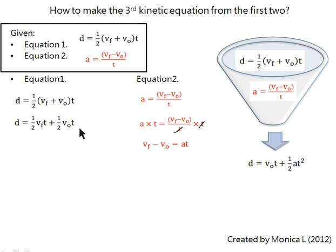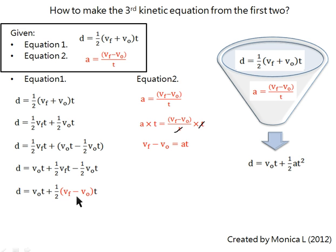Meanwhile, we expand the first equation. Then we make half vo t into vo t minus half vo t. We group half vf t and half vo t together, and factor out the common terms, which are half and t.